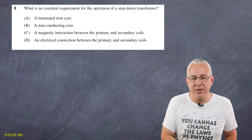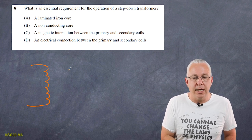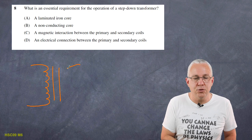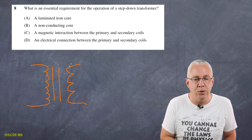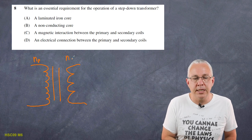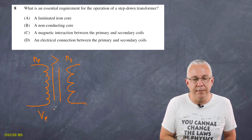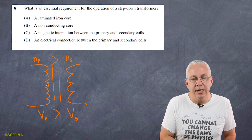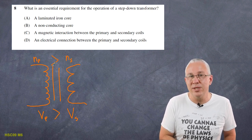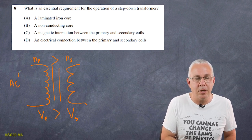Question 8: what is an essential requirement for the operation of a step-down transformer? A step-down transformer has two sides — primary and secondary coils. I'll draw a schematic: the number of loops in the primary core is greater than in the secondary, resulting in a step-down transformer where the voltage in the primary is larger than in the secondary. We need a changing flux in the primary to induce an EMF in the secondary, which is why an AC supply is typically applied.